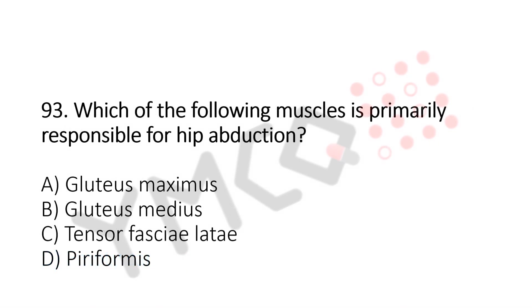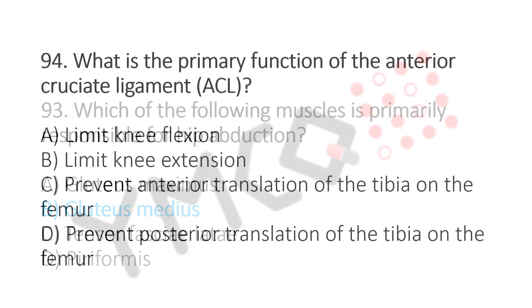Which of the following muscles is primarily responsible for hip abduction? Option A: gluteus maximus. Option B: gluteus medius. Option C: tensor fasciae latae. Option D: piriformis. And the answer is option B, gluteus medius. Now let us move to question number 94.